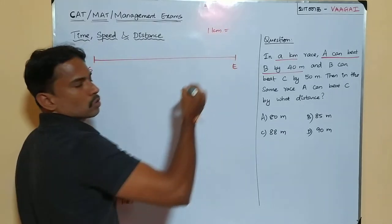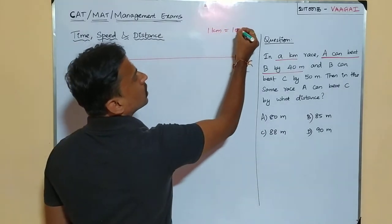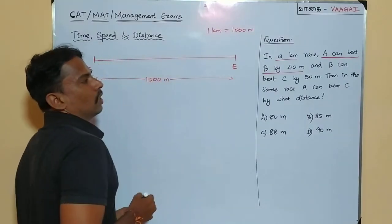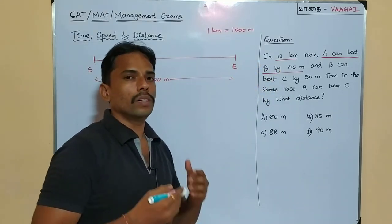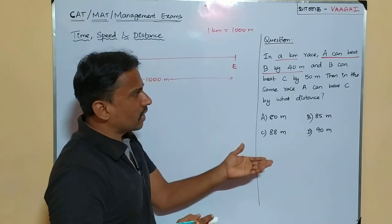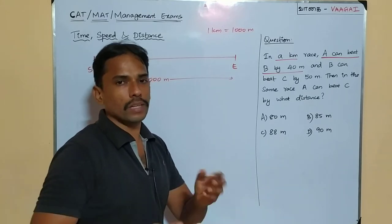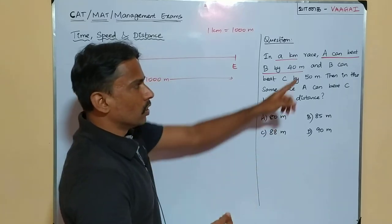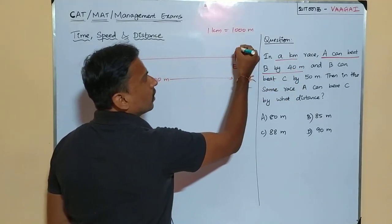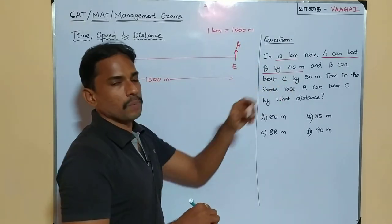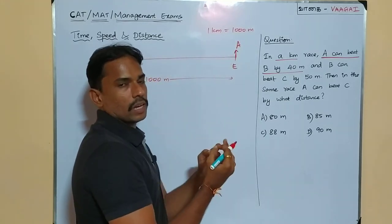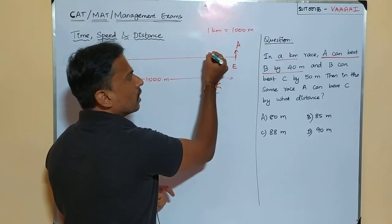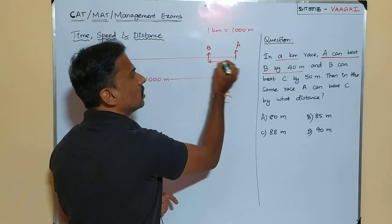We will express 1 kilometer in terms of meters. 1 kilometer equals 1000 meters, so the entire length of the track is 1000 meters. Now, A can beat B by 40 meters — A is going to win the race. When A is just completing the race and reaching the ending point, at that moment A is ahead of B by 40 meters. That is the gap between them at the finishing moment.